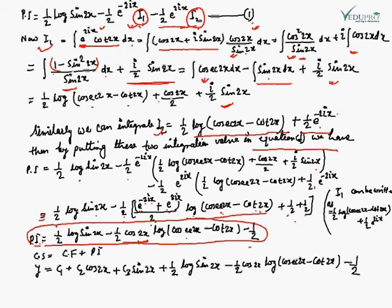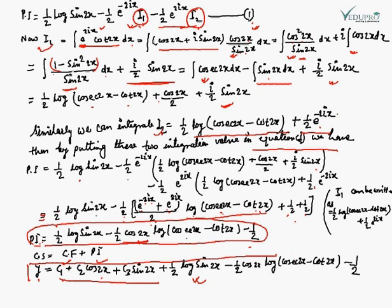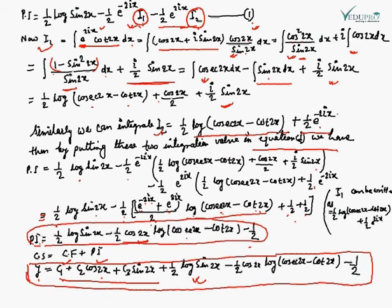The complete solution is y = CF + PI. So the final answer is y = c1 + c2 cos 2x + c3 sin 2x + PI, where PI is the particular integral we obtained. This is the final solution for the given differential equation.